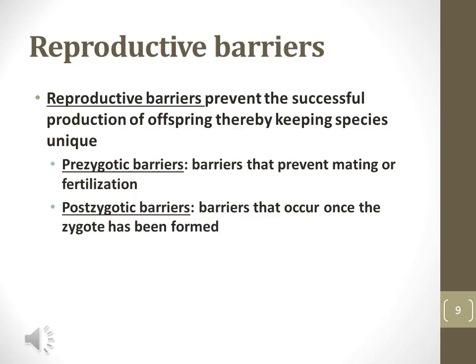An organism must reproduce in order for its genes to be passed on in a gene pool. Barriers are classified as prezygotic barriers, which prevent zygote formation, or postzygotic barriers, which prevent the zygote from surviving and or reproducing.